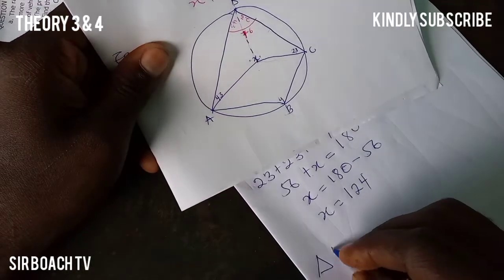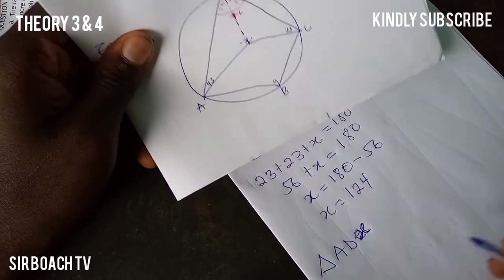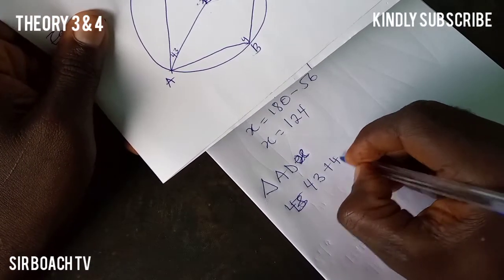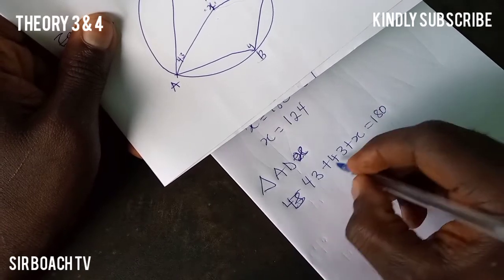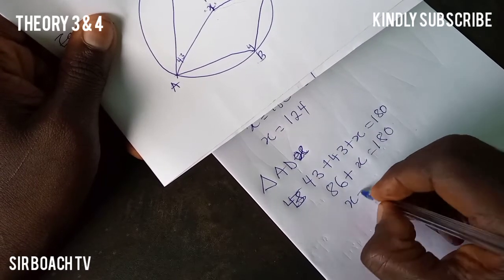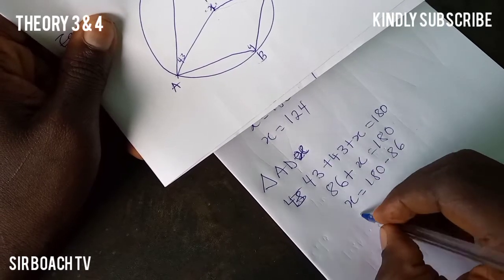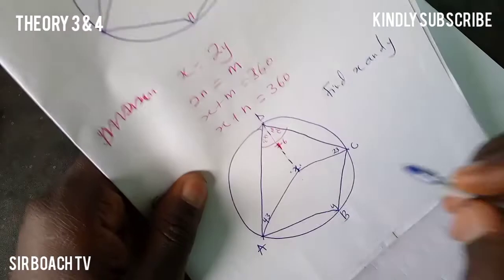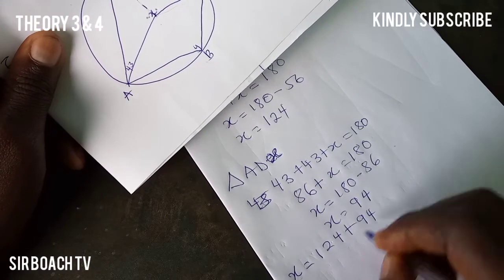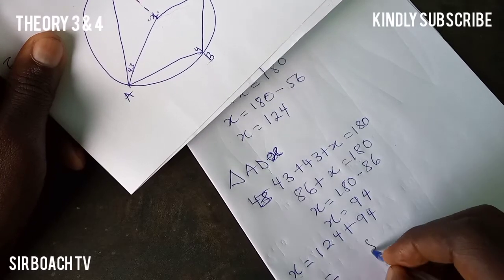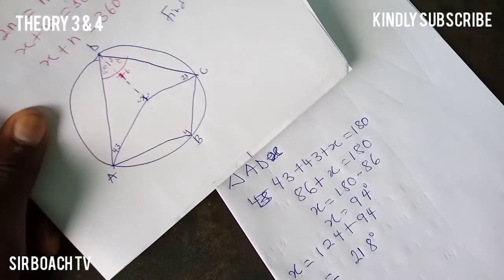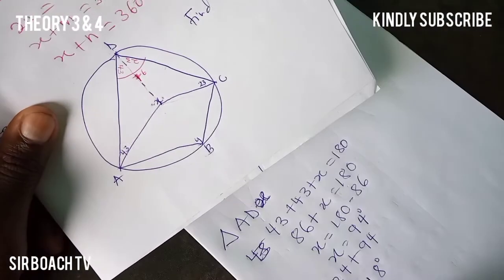In triangle ADX: 43 plus 43 plus x equals 180, giving 86 plus x equals 180, so x equals 180 minus 86, which means x equals 94 degrees. This side is also 94 degrees. Therefore, the total X equals 124 plus 94, so X equals 218 degrees.